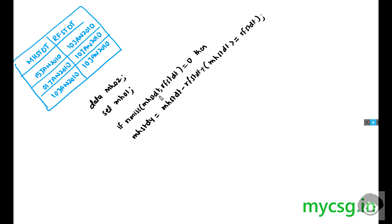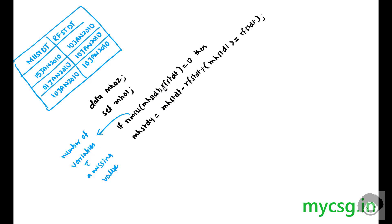To prevent that, we check whether both values are present in the date variables of interest — MHSTDT and RFSTDT. The NMISS function returns the number of missing variables passed to it. Here we have passed two variables: it returns 0 if both are present, 1 if one of them is missing, and 2 if both are missing. So we check: if NMISS(MHSTDT, RFSTDT) = 0, meaning both are present, then we execute the difference calculation.